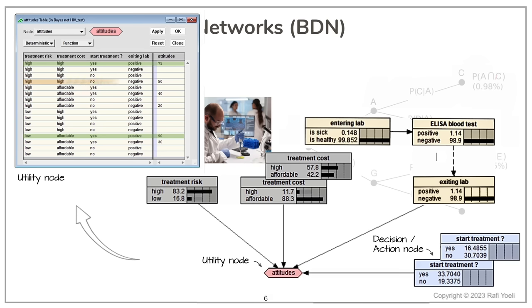Now let us look at the fourth line from the top. Here, the treatment cost is high, the risk is high, and the result from the test is negative. Few would argue that under these circumstances, a decision not to start the treatment seems logical. But why did the person who configured the utility node rate the conviction only at 50?